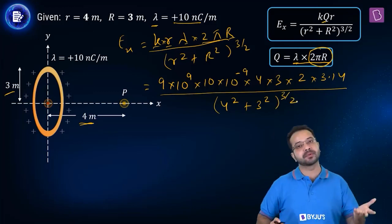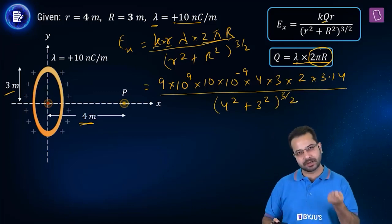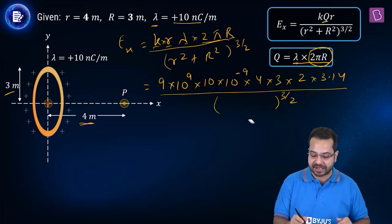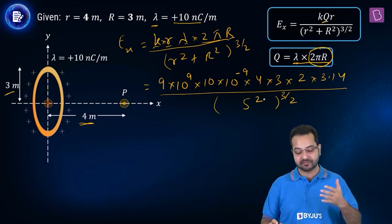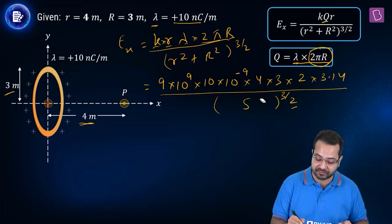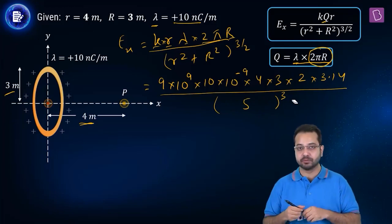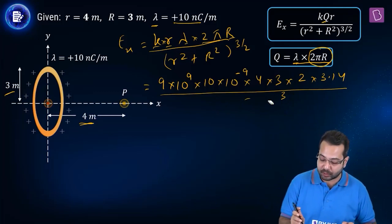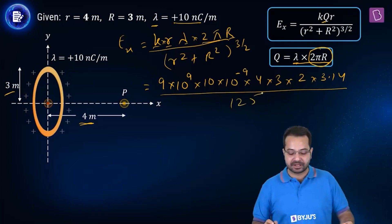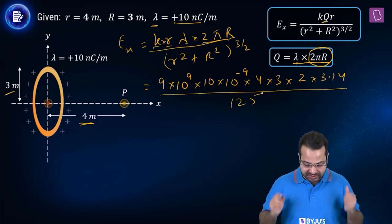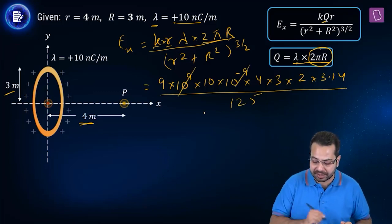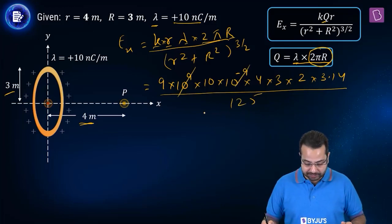4² plus 3² — we know this is a Pythagorean triplet, so this becomes 5². Taking the square root gives 5, then cubed gives 125. The 10⁹ and 10⁻⁹ cancel out, and with the 5 and 25 simplifications, we proceed with the remaining terms.